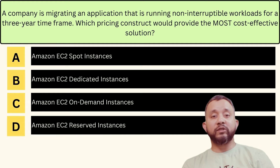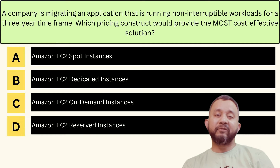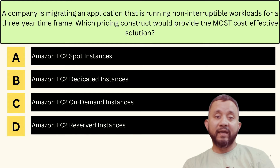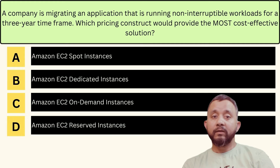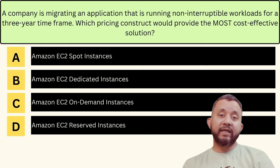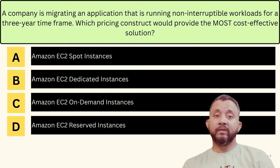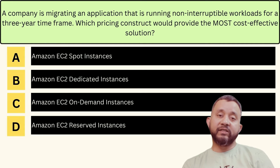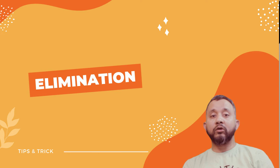For example, if the question is asking about latency, possible answers might be related to CloudFront or managed caching services like Redis or Memcached. If the question is asking about implementing high availability, possible answers could be auto scaling or serverless architecture. So take these keywords very seriously.